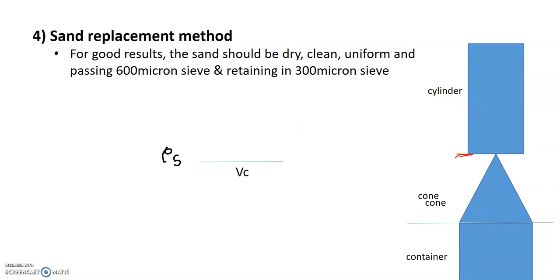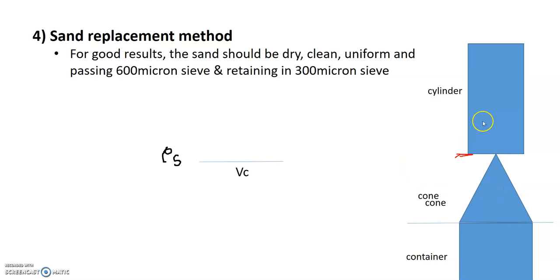For the Sand Replacement Method, we have a sand-filled cylinder. The initial weight of the cylinder with sand is W1. We use a container — we can pour sand through a cone into the container. The cone can be of 600 mm size or 300 mm size. If we fill the cylinder with sand, the weight is recorded as W1.